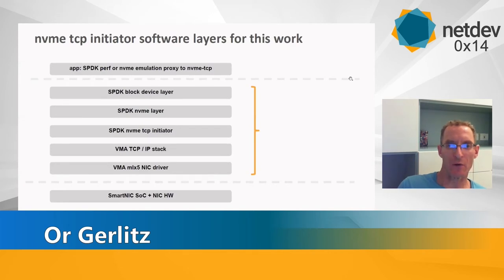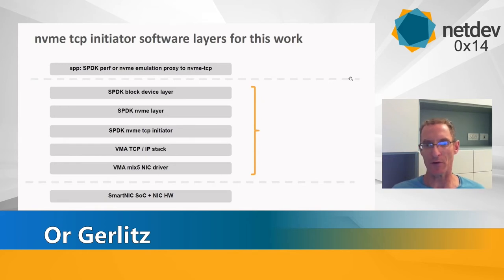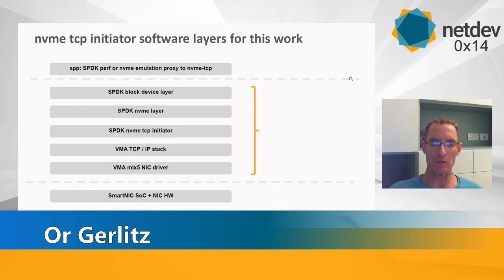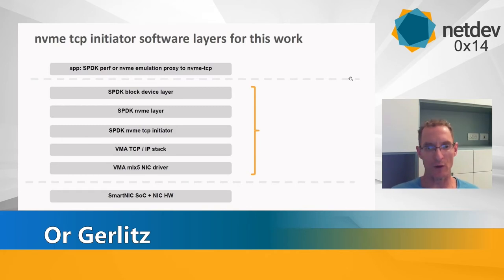The layers relevant to this work are in the middle: above we have either the SPDK perf benchmark or the NVMe emulation proxy, which proxies emulated NVMe PCI to NVMe over TCP. In the middle is SPDK — a block layer, NVMe layer, and NVMe TCP layer — and below that is VMA, which contains both the TCP/IP stack and the NIC driver for ConnectX-5. Below that is the hardware. This is all a single process with different software layers.